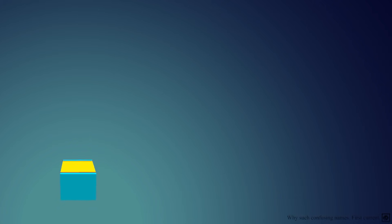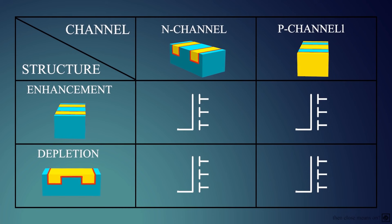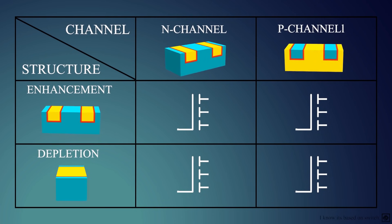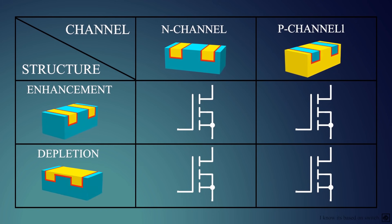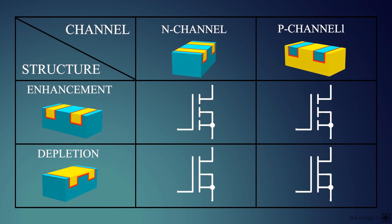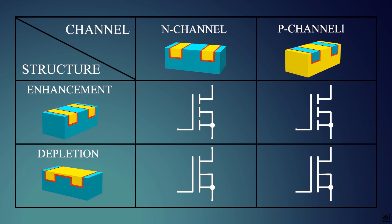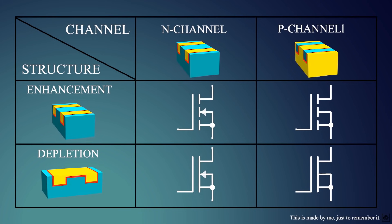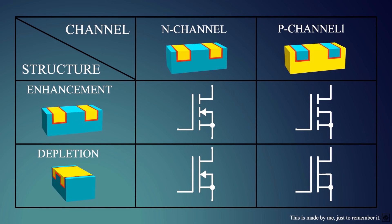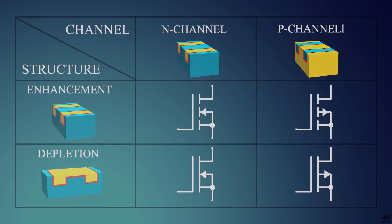Now let us look at the circuit symbols of MOSFET. There are four terminals: source, gate, drain, and substrate. The gate is not directly connected to the substrate as an insulator is present, hence the gate terminal is floating in the symbol. Source and substrate are connected internally, hence we connect them in the symbol also. If the lines are broken, then it's enhancement type as the channel needs to be formed; if it's one solid line, then the channel is present and it's depletion type. If the arrow is pointing towards the substrate, then it's N-channel, or the electrons flow towards the gate to form an N-channel; otherwise it's P-channel, where electrons flow away from the gate to form a P-channel.